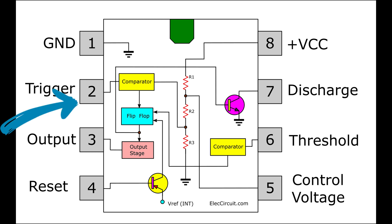Pin 2 is trigger. This is used for starting of timing input. When trigger voltage is less than 1/2 control voltage, it sets output high and discharge open.